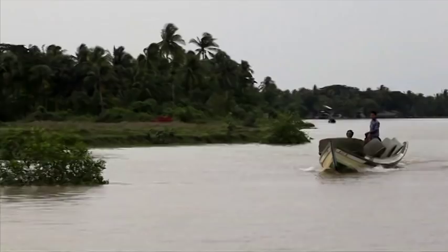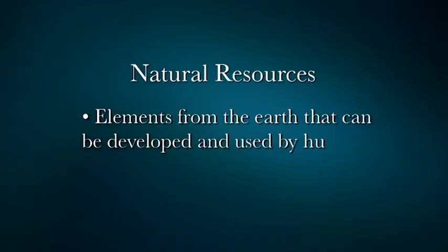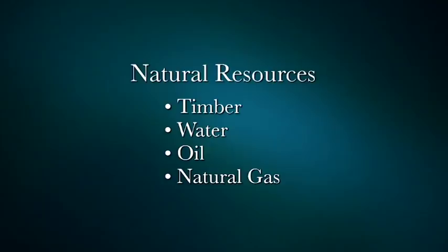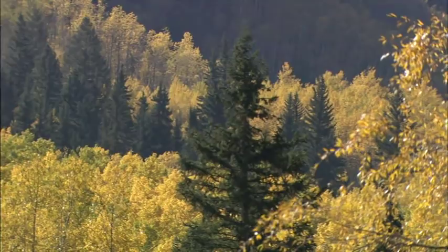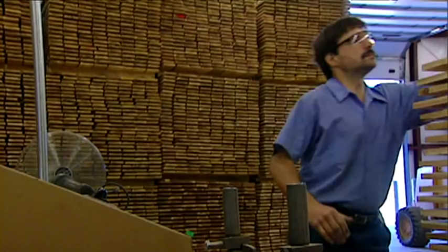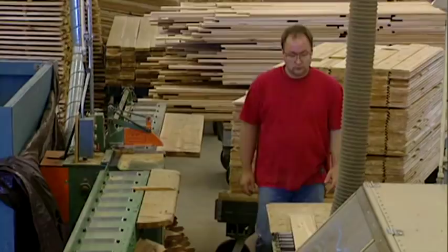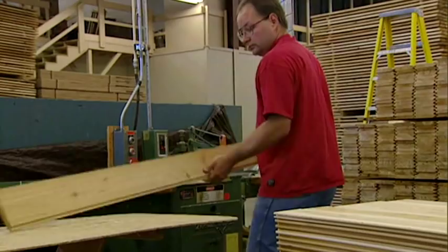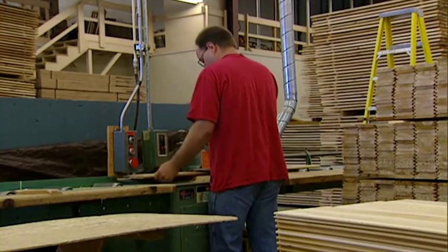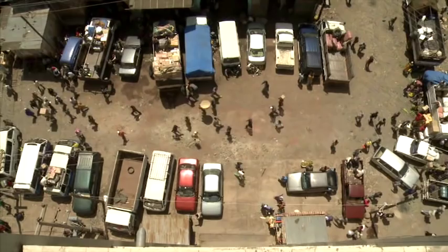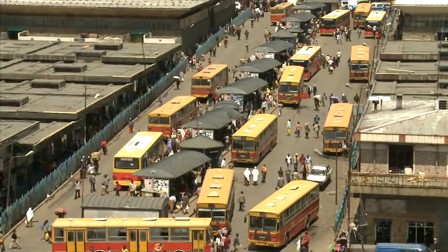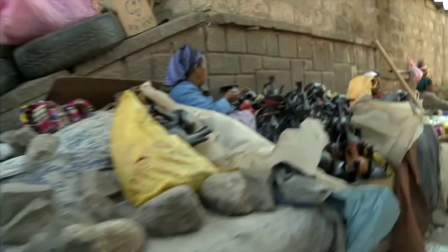Natural resources are elements from the earth that can be developed and used by humans in their economic production. Timber, water, oil, natural gas, and minerals are all natural resources. The natural resources of a region determine what materials are available for economic production. In a forested region, people may be employed in cutting timber, working in mills, or using wood products to make flooring or siding for houses. Because natural resources are unevenly distributed from nation to nation, people from different cultures usually interact with each other to meet their basic needs and wants. When goods are exported by one country and imported by another, it's called trade.